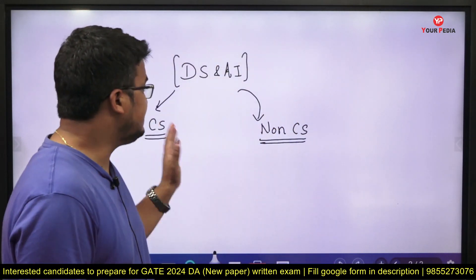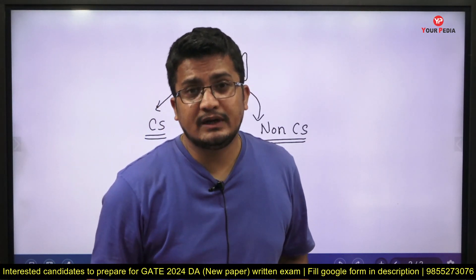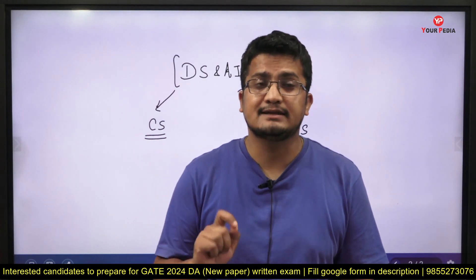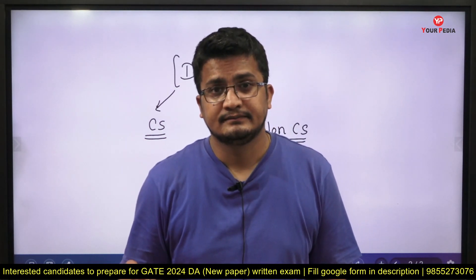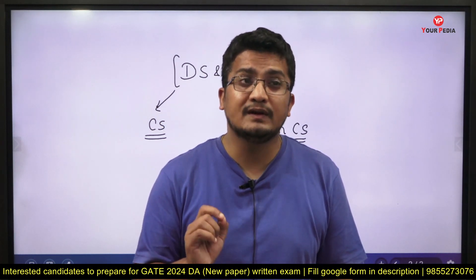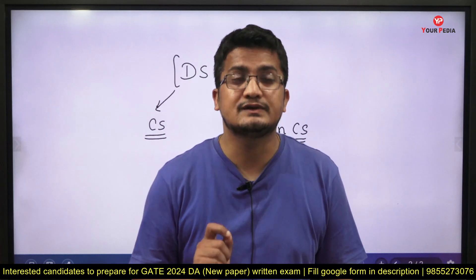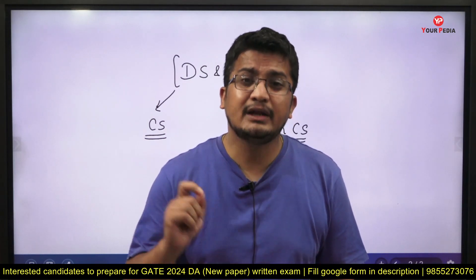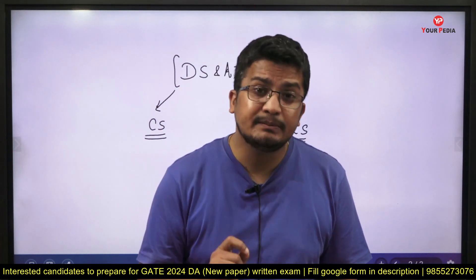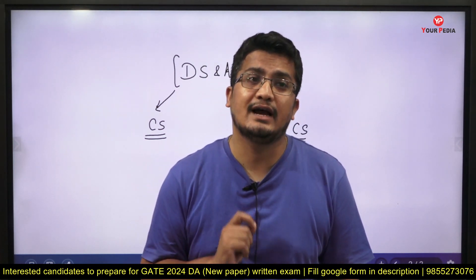You can see behind me, it is divided into CSC and Non-CSC. Computer Science students are obviously eligible to write DS and AI as a secondary paper. On the other side, there are other branches which are Non-CS branches, like Electronics, Electrical, Mechanical, Instrumentation, etc. They are also made eligible to write Data Science and Artificial Intelligence as a second paper.